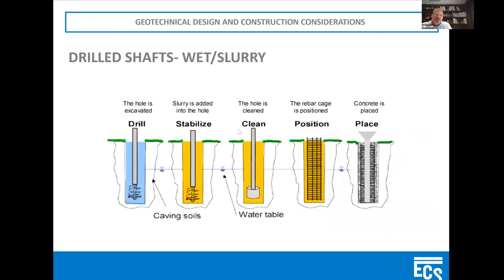The slurry mix is always in the hole as they drill down. You can see from the depiction how the augers dig down into the ground — they drill a little bit, pull the auger out, go back in, drill a little more, and keep doing this until they reach the required depth. The slurry is heavier than water and the mass of the soil, so it keeps the hole stable — the sides don't collapse on themselves. Because they have that slurry mixed in the hole, the excavation remains open throughout the entire drilling process.